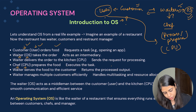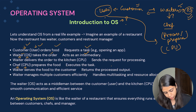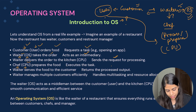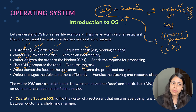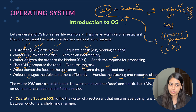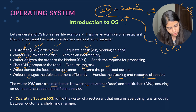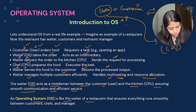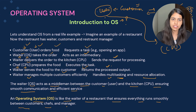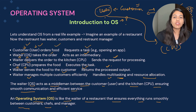The customer orders food — in the same way, the user requests a task. The waiter takes the order — in the same way, the operating system acts as an intermediary between the user and the hardware. The waiter delivers the order to the kitchen — the OS sends the request for processing. The chef prepares the food — the CPU executes the task. The waiter serves the food — the OS returns the processed output. The waiter manages multiple customers efficiently — the OS handles multitasking and resource allocation. The OS ensures smooth communication and efficient service, acting as the intermediary between the user and hardware.